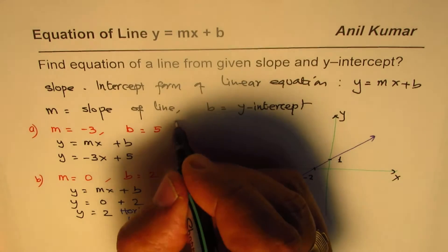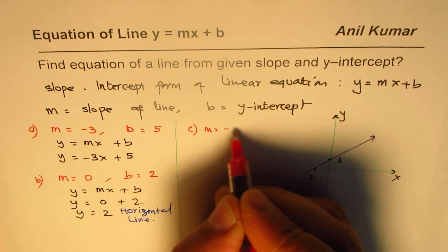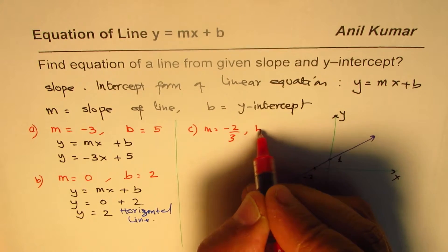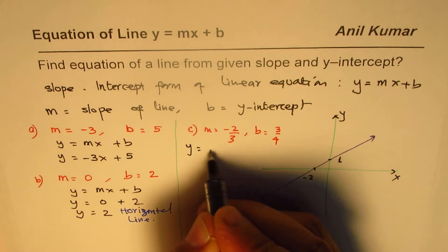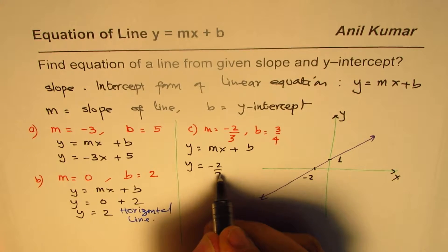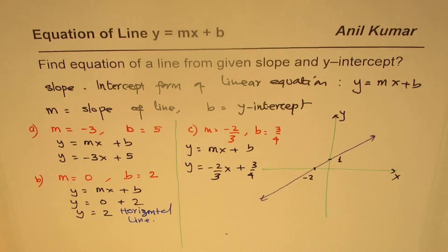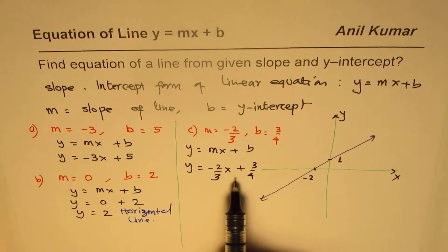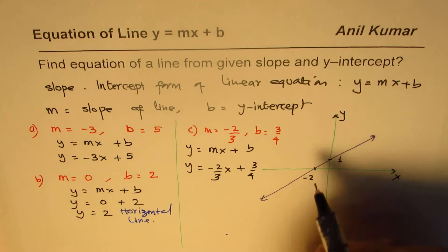Let's try example c with fractional values: m = -2/3 and b = 3/4. Substituting straight into y = mx + b, we get y = -2/3 x + 3/4. That's how you write the equation of a line in slope-intercept form when slope and intercept are given.